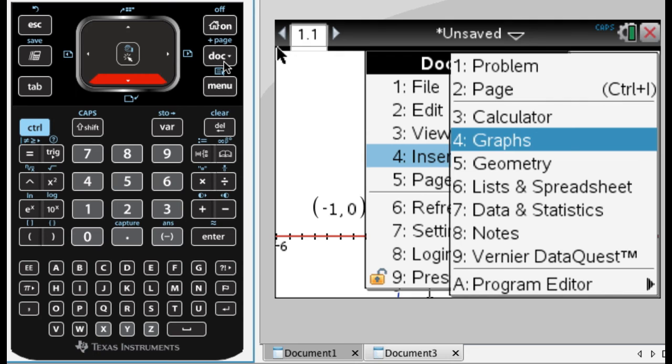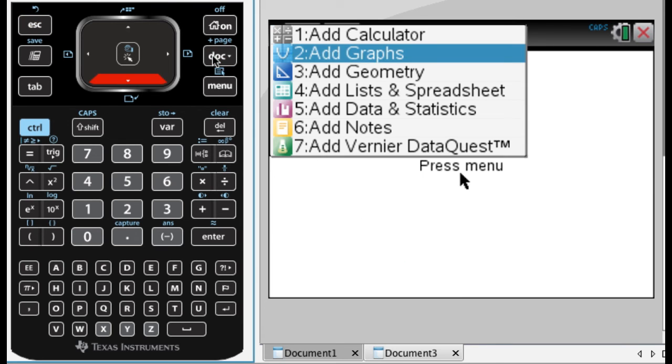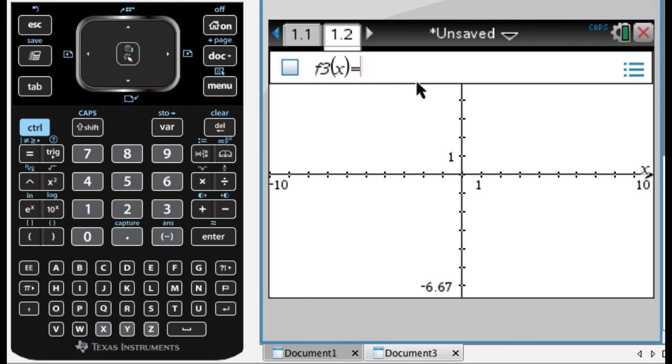There's a faster way to do that, I think. I just, for whatever reason, don't do it. Control menu, nope, control, oh, control doc, let's try that, control doc, and then graph. That's a faster way to do it.